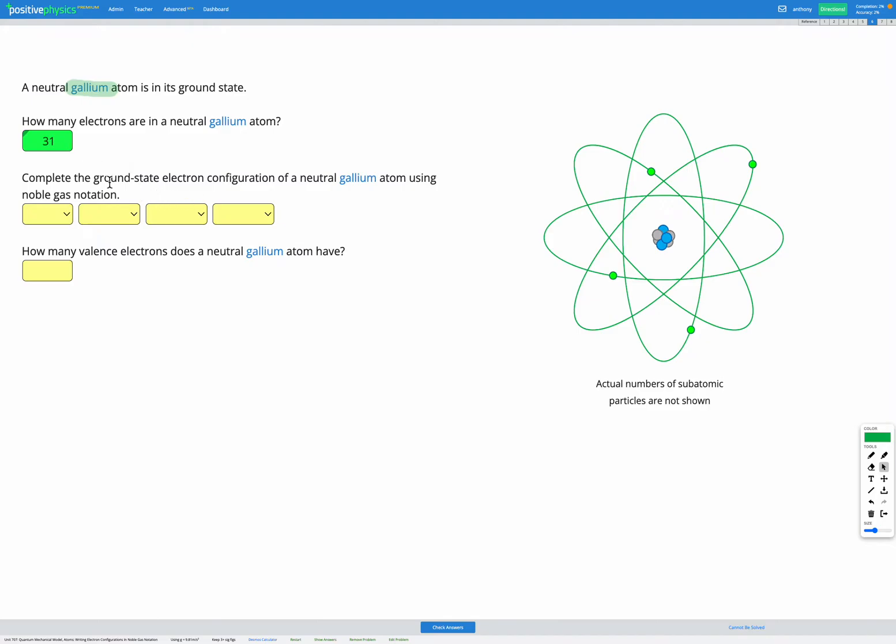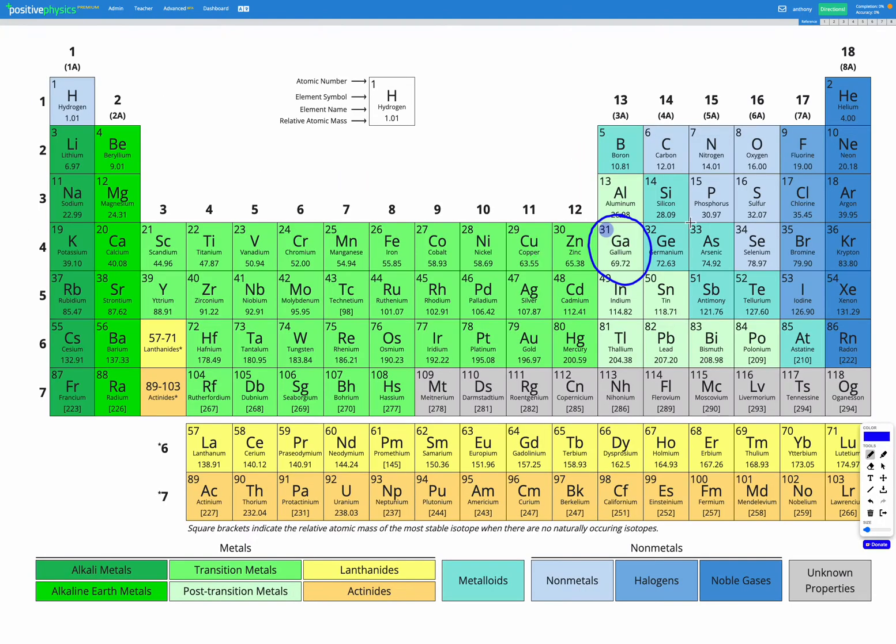Now we're going to draw our electron configuration. However, it's asking for noble gas notation. So what that means is, instead of writing out a really long electron configuration with all of our sublevels shown, we're going to use a shorter method, where first we have a noble gas, which is, if we go to our periodic table, one of these elements in group 18. That's these elements here. These are our noble gases.